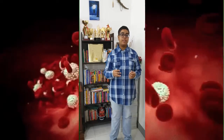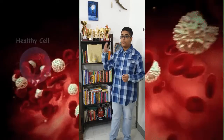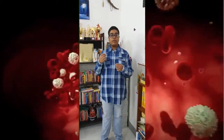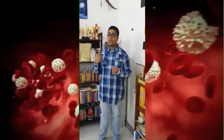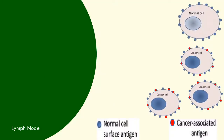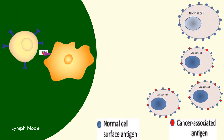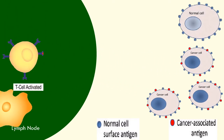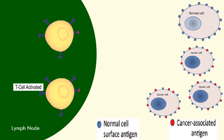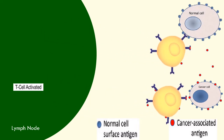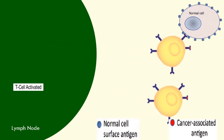Our immune system has the ability to discriminate between healthy cells and cancerous cells, which it does by recognizing a specific set of proteins or sugars known as antigens. Once an antigen presenting cell recognizes a certain antigen as foreign, it notifies and activates the T cells, which then fight back against the disease by destroying the cancerous cells. The T cells also have the ability to remember the antigen for future recognition.